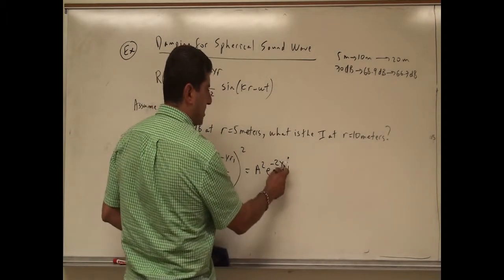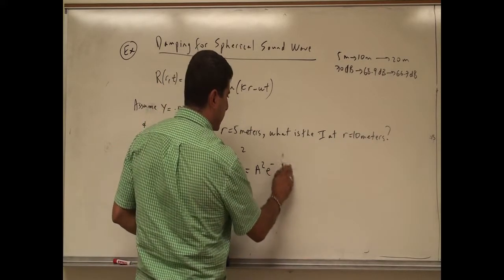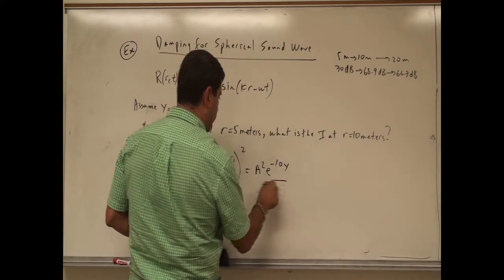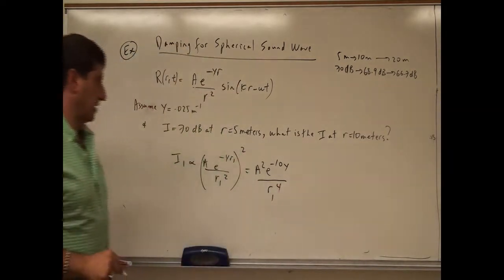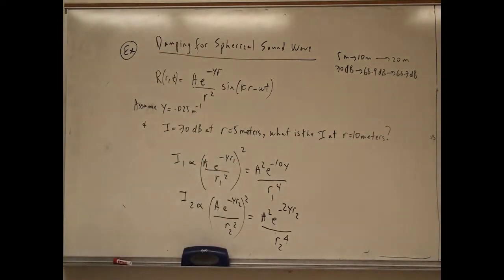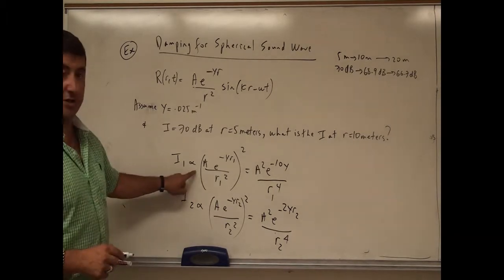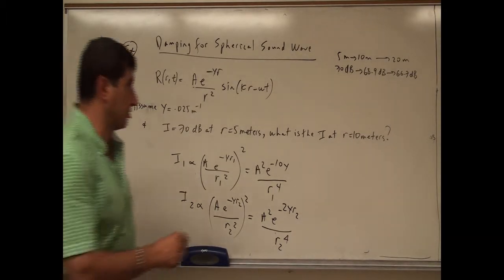So we can say this is 5, E to the minus 10 gamma, divided by R1 to the power 4. So then we're going to say that this is the log of this is going to be 70 decibels.